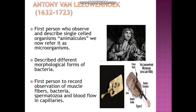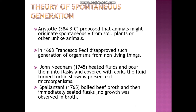Antony van Leeuwenhoek was the first person who observed and described single-cell organisms called animalcules, which we now refer to as microorganisms. He described different morphological forms of bacteria and was the first person to record observations of muscle fiber, bacteria, spermatozoa and blood flow in capillaries. After that came Aristotle, Francisco Redi, John Needham and Spallanzani.